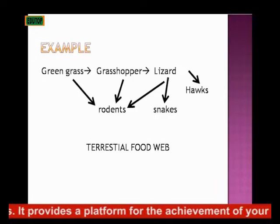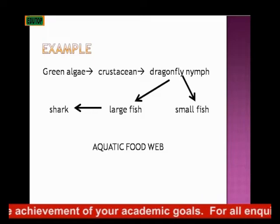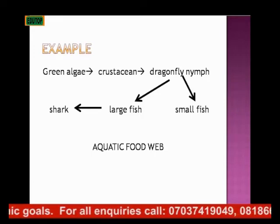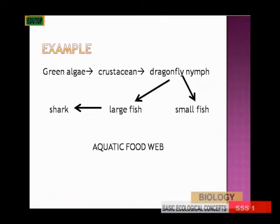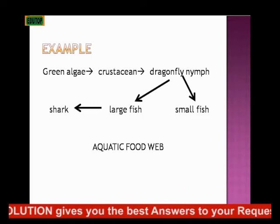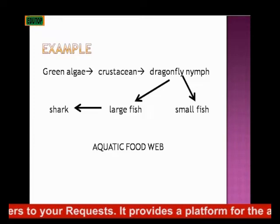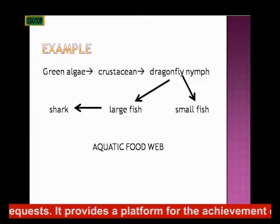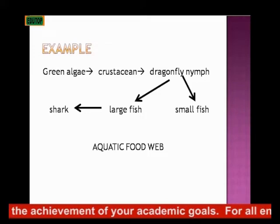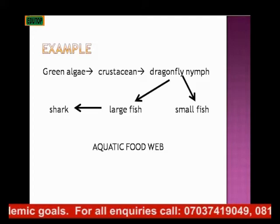Here is an example of an aquatic food web. You have an interlocking pattern of food chains — more than one food chain connecting at particular points. For example, the large fish and the dragonfly share a connecting point, and the small fish and the dragonfly form another connecting point between two food chains. This is an example of an aquatic food web.